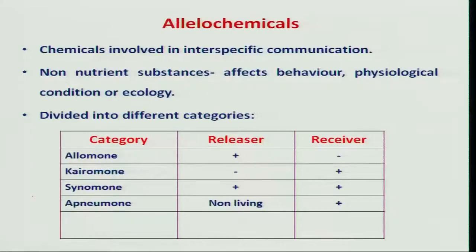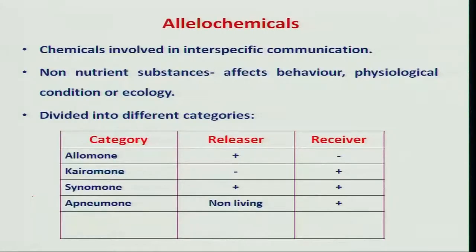Friends, in a previous class we studied the various chemicals involved in changing the behavior of insects for pest management. Among them we have two main groups: chemicals used for intra-communication and chemicals used for inter-communication. Here we have allelochemicals, which are used for interspecific communication and they are going to change the insect behavior and also ecology.